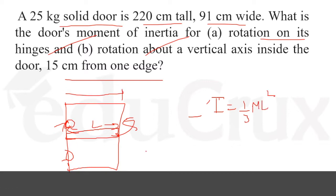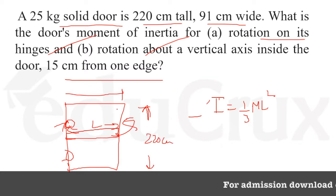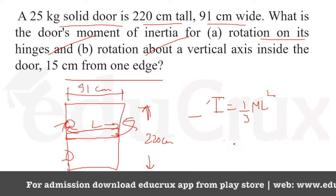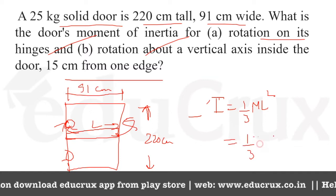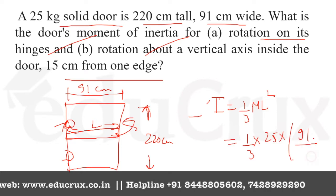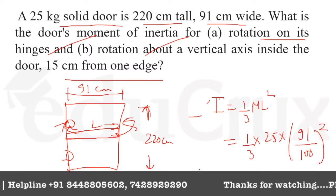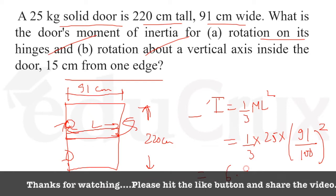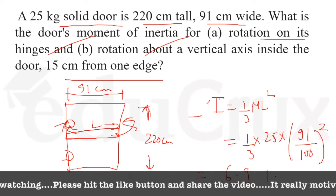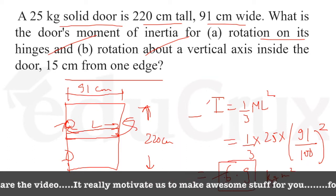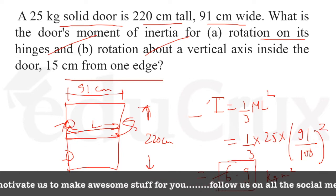L is the width, which is 91 cm. So the formula gives us 1/3 × m × L² = 1/3 × 25 × (0.91)². When you solve this, it comes out as 6.9 kg·m². This is the moment of inertia of the door about its hinges, so Part A is solved.